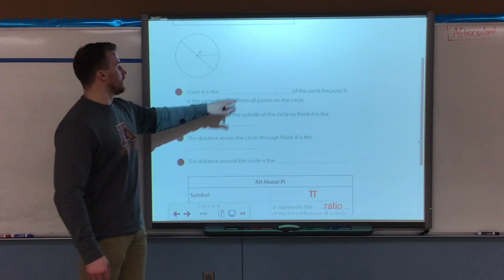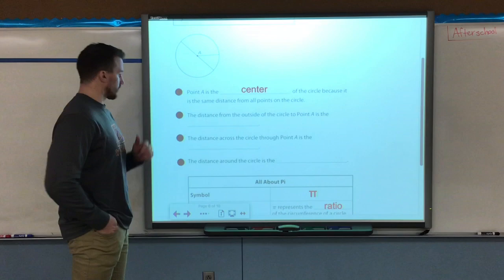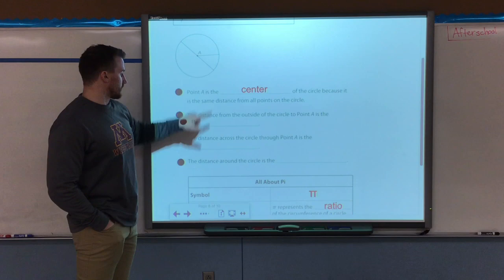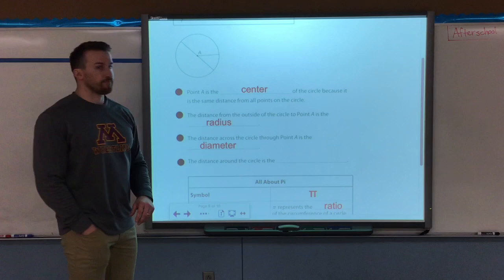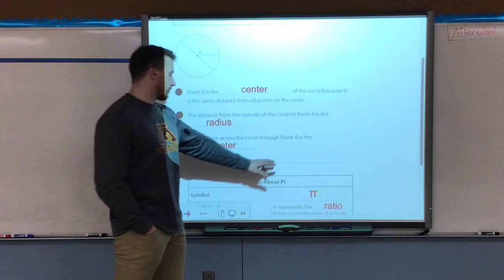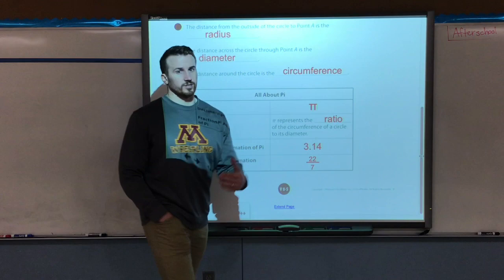If we look at this diagram of the circle, point A is the center of the circle because it's the same distance from all the points around the circle. The distance from the outside of the circle to point A, this line segment, is called our radius. That's halfway across our circle. The distance all the way across the circle through our center point A is called our diameter, and the distance around the circle, similar to perimeter, is circumference.